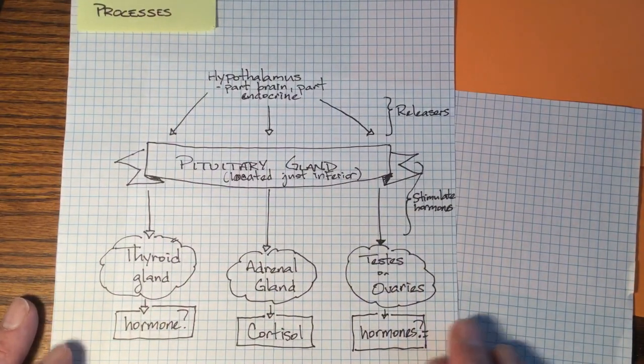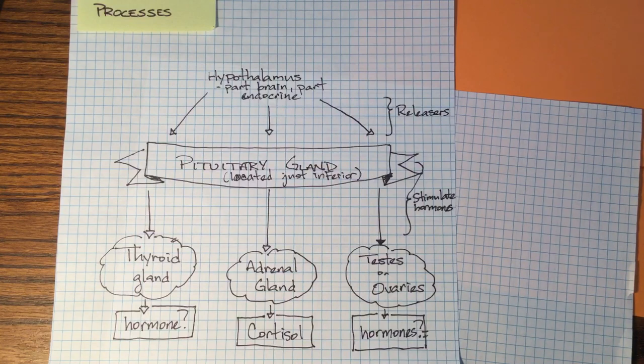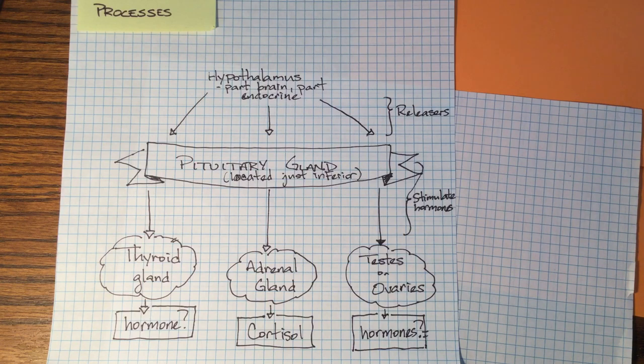The hypothalamus is in control of a lot of different things, and it'll be in control of these things called cascades. The hypothalamus is in your brain. It's part brain, it's part endocrine system. It will basically send releasing hormones during certain times to tell the pituitary gland, which is just inferior to it, so it doesn't have to go very far in the bloodstream, to tell the pituitary gland to stimulate other glands.